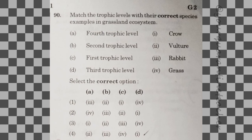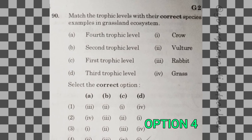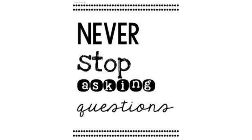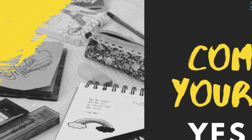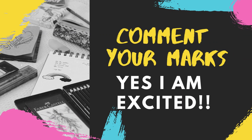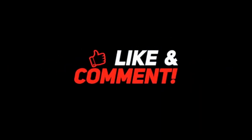90th question: match the trophic level. The correct answer is option 4. We have now completed all 90 questions. If you have any doubts, please leave a comment. Give it a thumbs up if you found it useful — thank you so much for watching this video, bye!